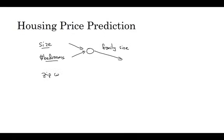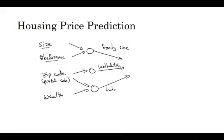And then maybe you know the zip codes, in different countries it's called the postal code, right, of the house. And the zip code maybe is a feature that tells you walkability. So is this neighborhood highly walkable? Can you just walk to the grocery store and walk to school or do you need to drive? Some people prefer highly walkable neighborhoods. And then the zip code as well as the wealth maybe tells you, certainly in the United States, but some other countries as well, tells you how good is the school quality. So each of these little circles I'm drawing can be one of those ReLU, Rectified Linear Units or some other slightly non-linear function. So that based on the size and number of bedrooms, you can estimate the family size, the zip code, estimate walkability, based on zip code and wealth, you can estimate the school quality.